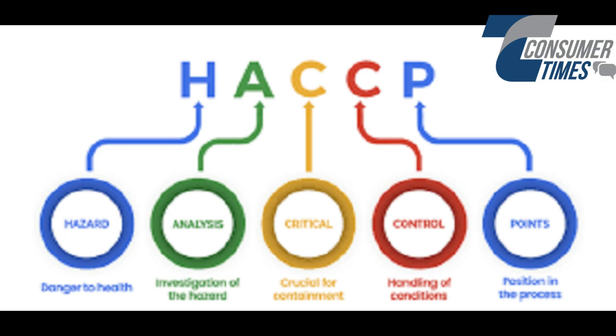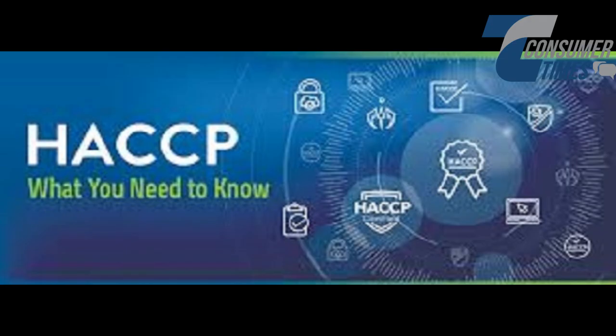Physical hazards include foreign objects such as metal fragments, glass shards, or plastic pieces that may accidentally enter the food during processing or packaging. By identifying these hazards early, food manufacturers can develop controls to minimize risks effectively.